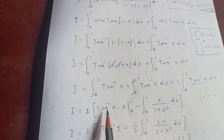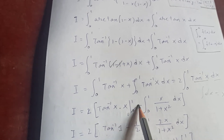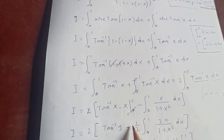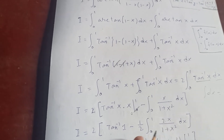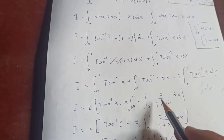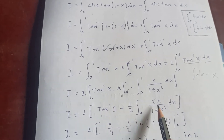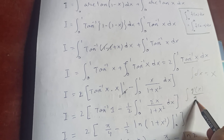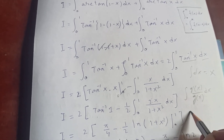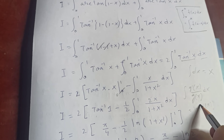Putting in the limits: at x equals 1, arctan(1) equals pi over 4, times 1; at x equals 0, it equals 0. So the boundary term gives pi over 4. For the remaining integral, we write it as one half times the integral from 0 to 1 of 2x over (1 plus x squared) dx — multiplying and dividing by 2 — so the two factors cancel. This integral has the form of g-prime(x) over g(x), which integrates to log of g(x).